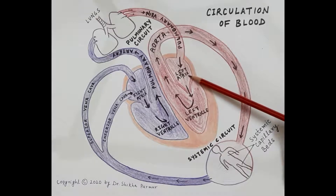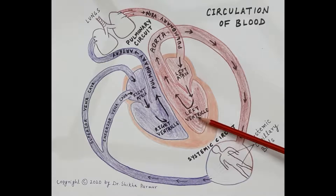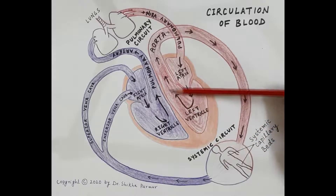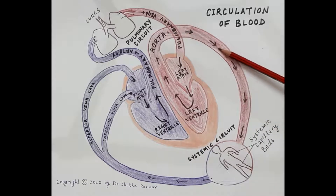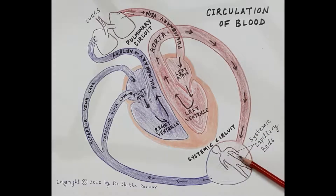It is the left atria which has received the oxygenated blood. When the left atria contracts, the oxygenated blood is pumped into the left ventricle, and when the left ventricle contracts, this oxygenated blood is pumped into the aorta. The aorta is the largest artery of the body and its function is to supply oxygenated blood to the body tissues of the entire body.